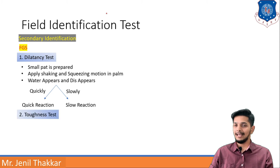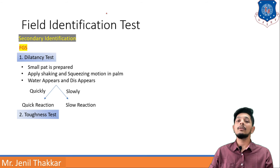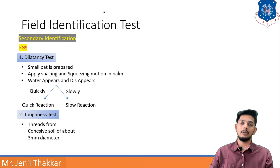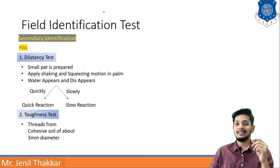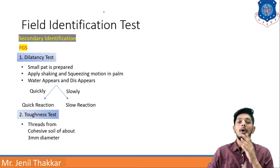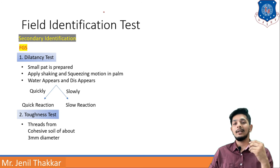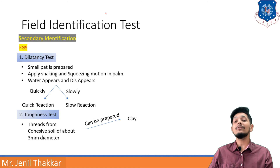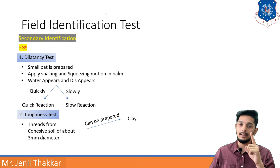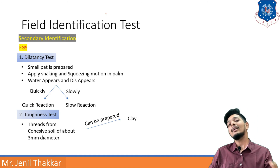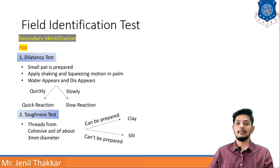The second test is the toughness test, which measures the toughness of the soil. Threads from cohesive soil of about 3 mm diameter should be prepared — the same as in the plastic limit test. If the 3 mm thread can be prepared, it must be clay. If it cannot be prepared, it will be silt. That is how you can decide if it is clay or silt.